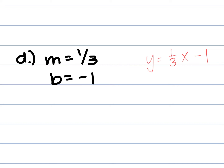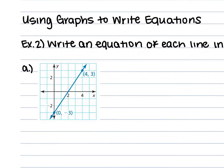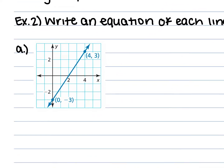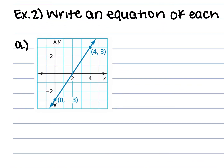Any questions so far on what I've done? It's fairly easy when they give us the slope and the y-intercept. Now in the next examples they're not going to give us the slope — we're going to have to calculate it ourselves. We're still writing the equation in slope-intercept form, but we don't know m or b; we have to figure them out from the graph.